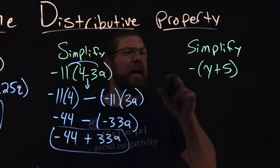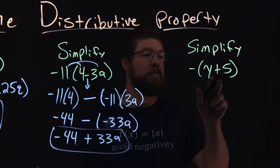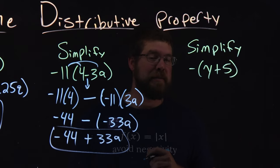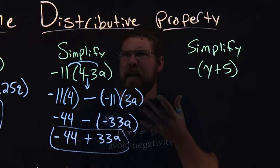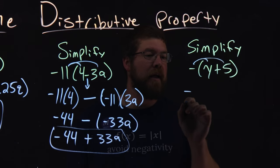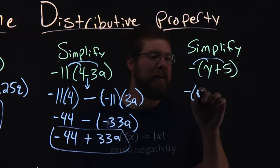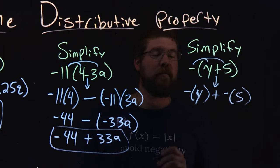Lastly, we have a negative just by itself outside of y plus 5. Again, these terms are not alike, so we can't add them together. We have to distribute the negative sign. Think of it as a negative 1 that's there. Multiply that out. Negative outside of y, almost wrote 5, plus, this comes down, negative outside 5.